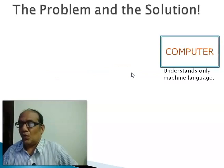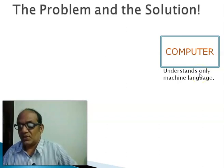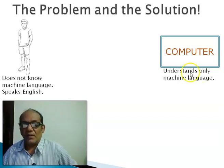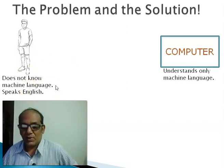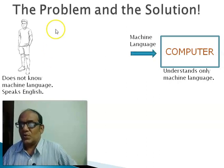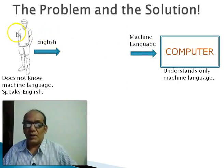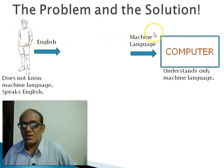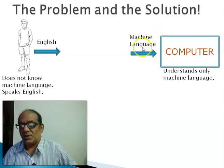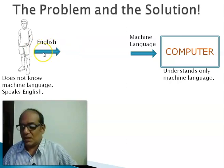We know that a computer understands only machine language, that is a language of zeros and ones, and a human being does not know machine language very well. It is difficult to program in. He speaks English with a little bit of mathematics embedded in between. That is, a computer expects instructions in machine language, and a human can give instructions in English.